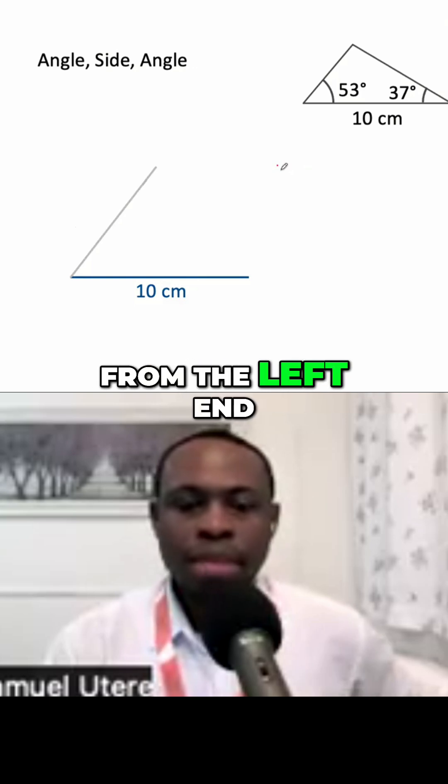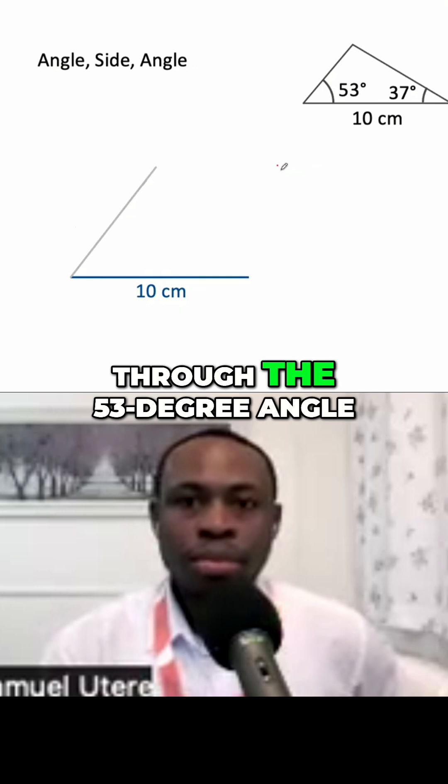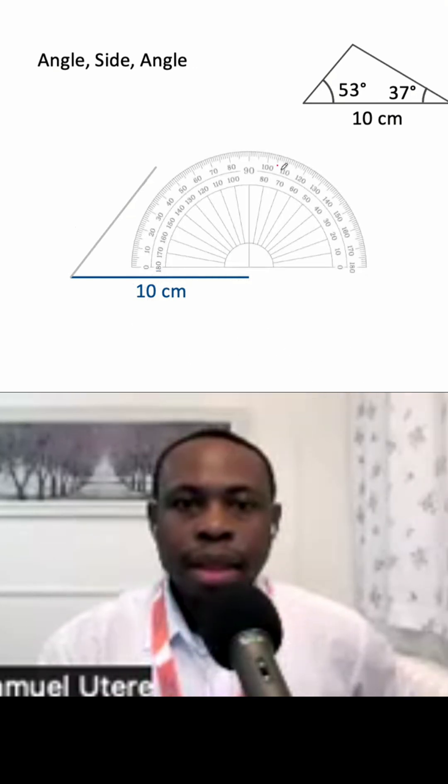We draw the line from the left end of the 10cm line to pass through the 53 degree angle point we marked. Next,